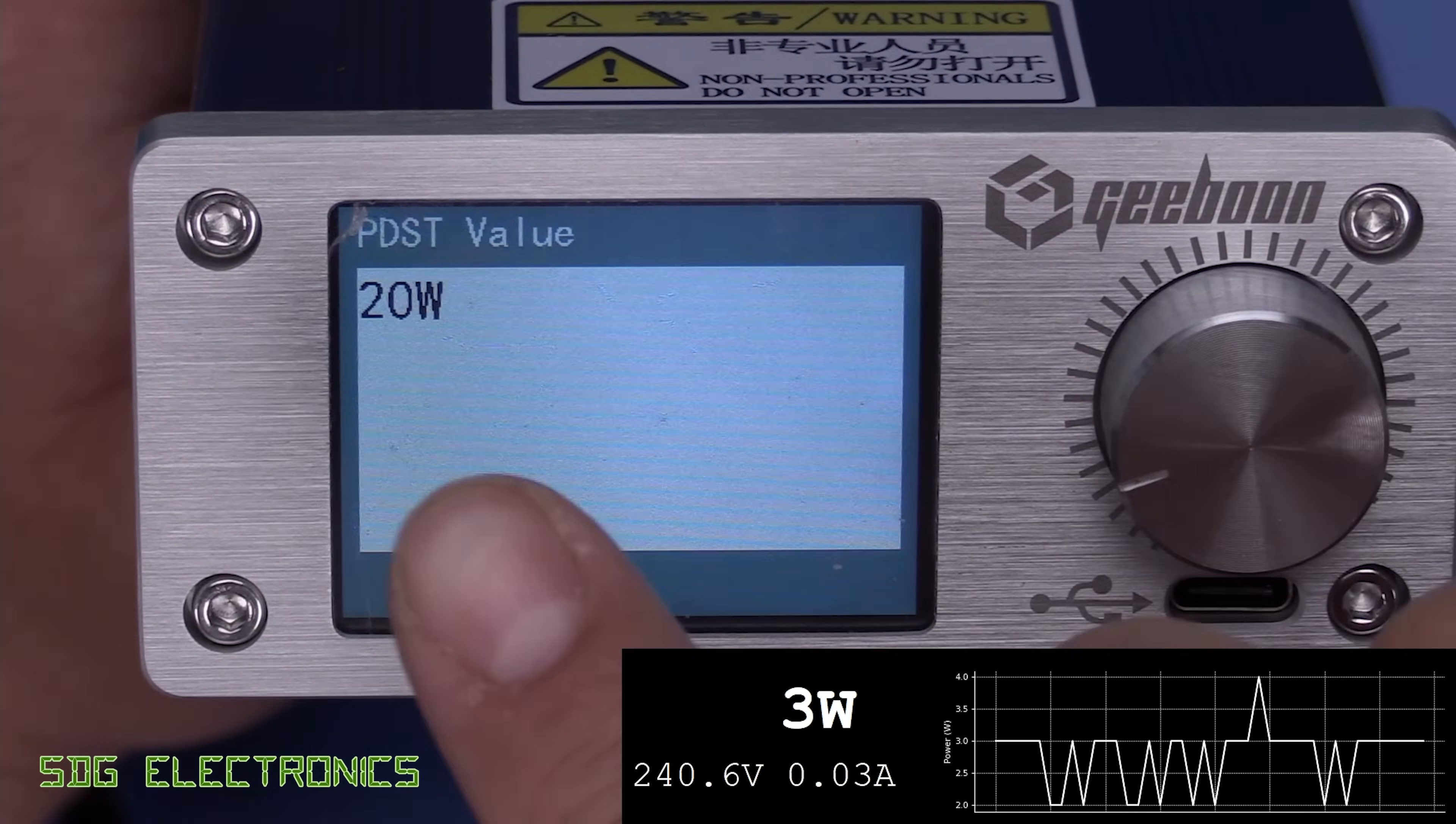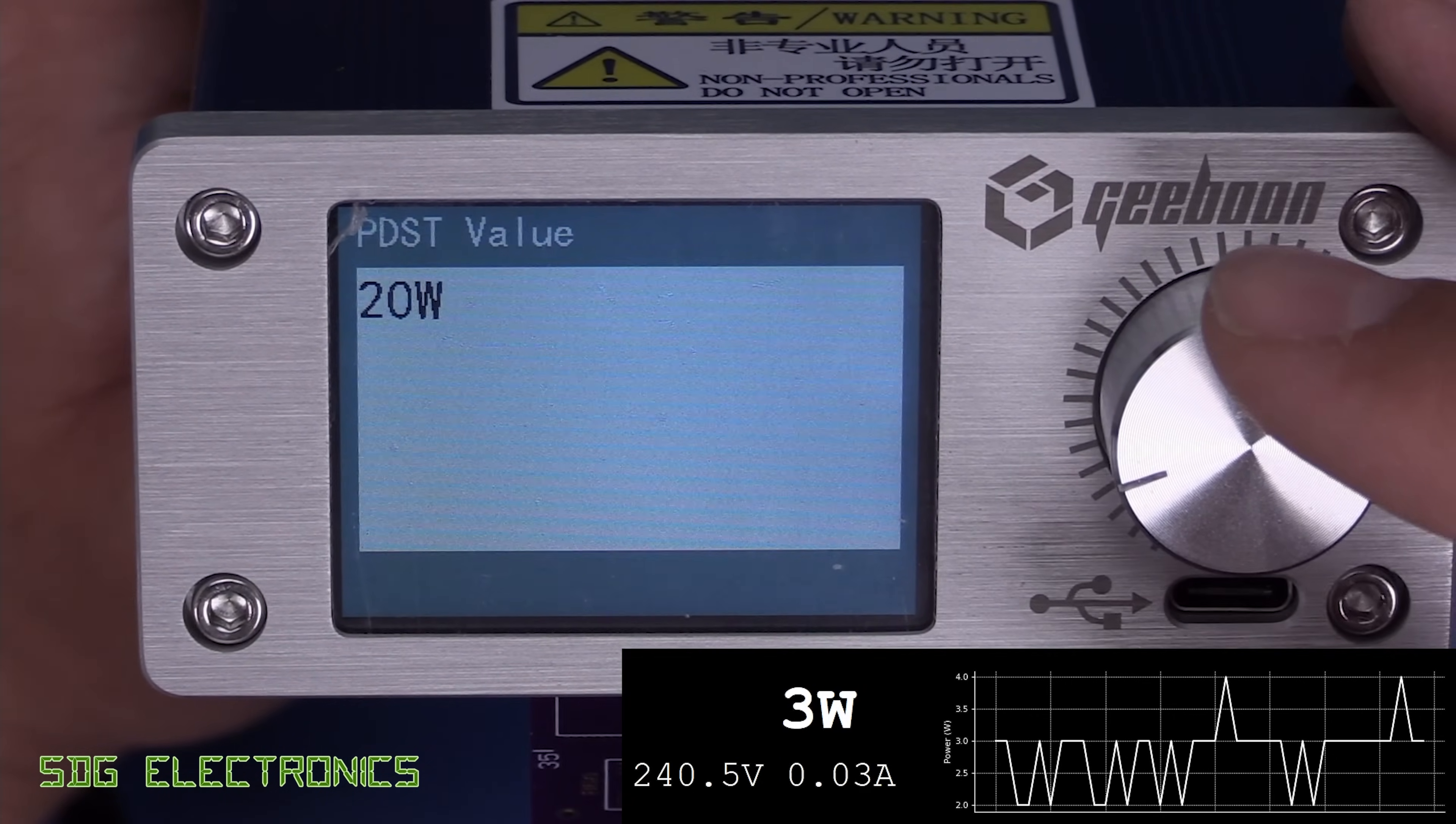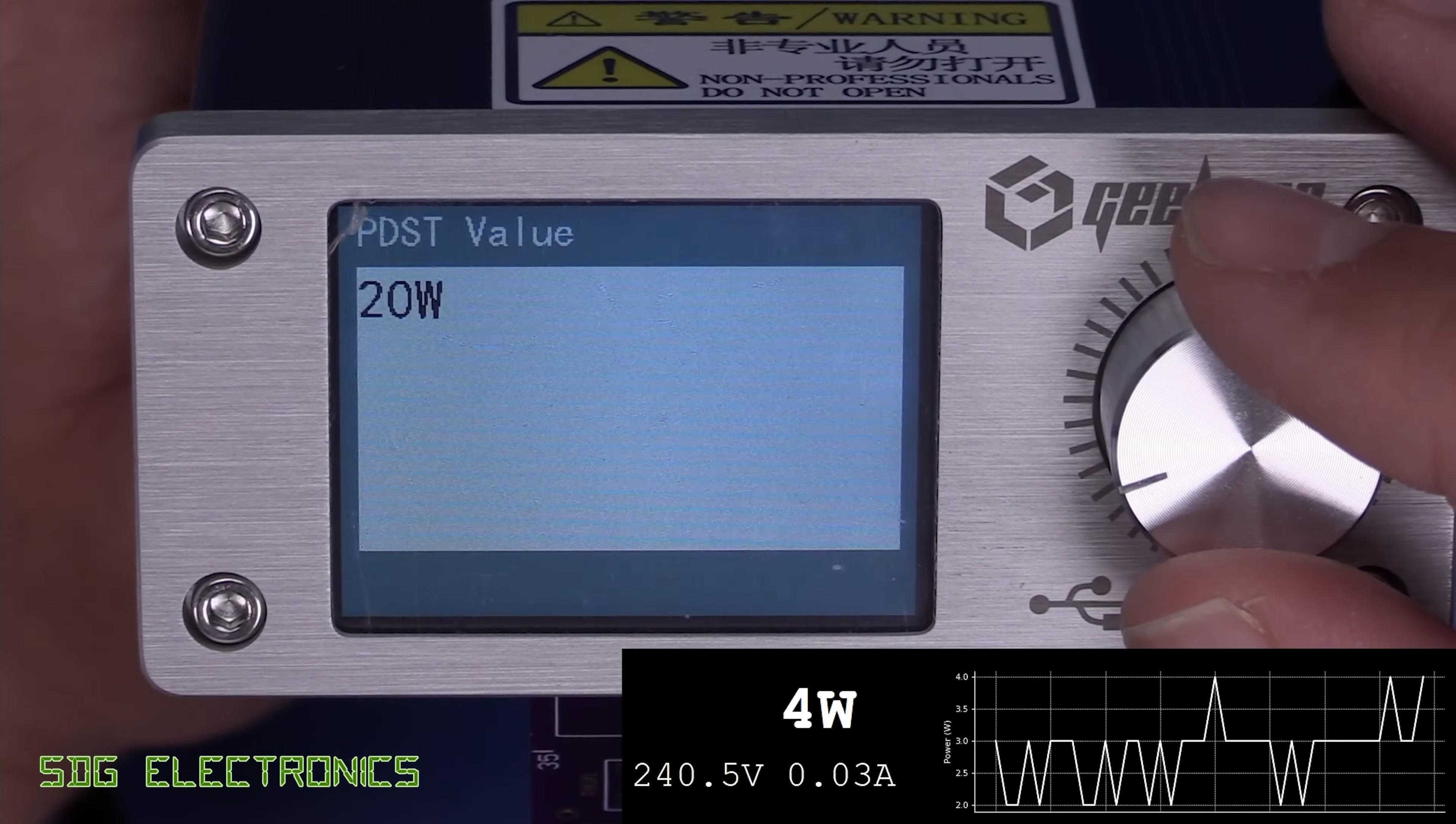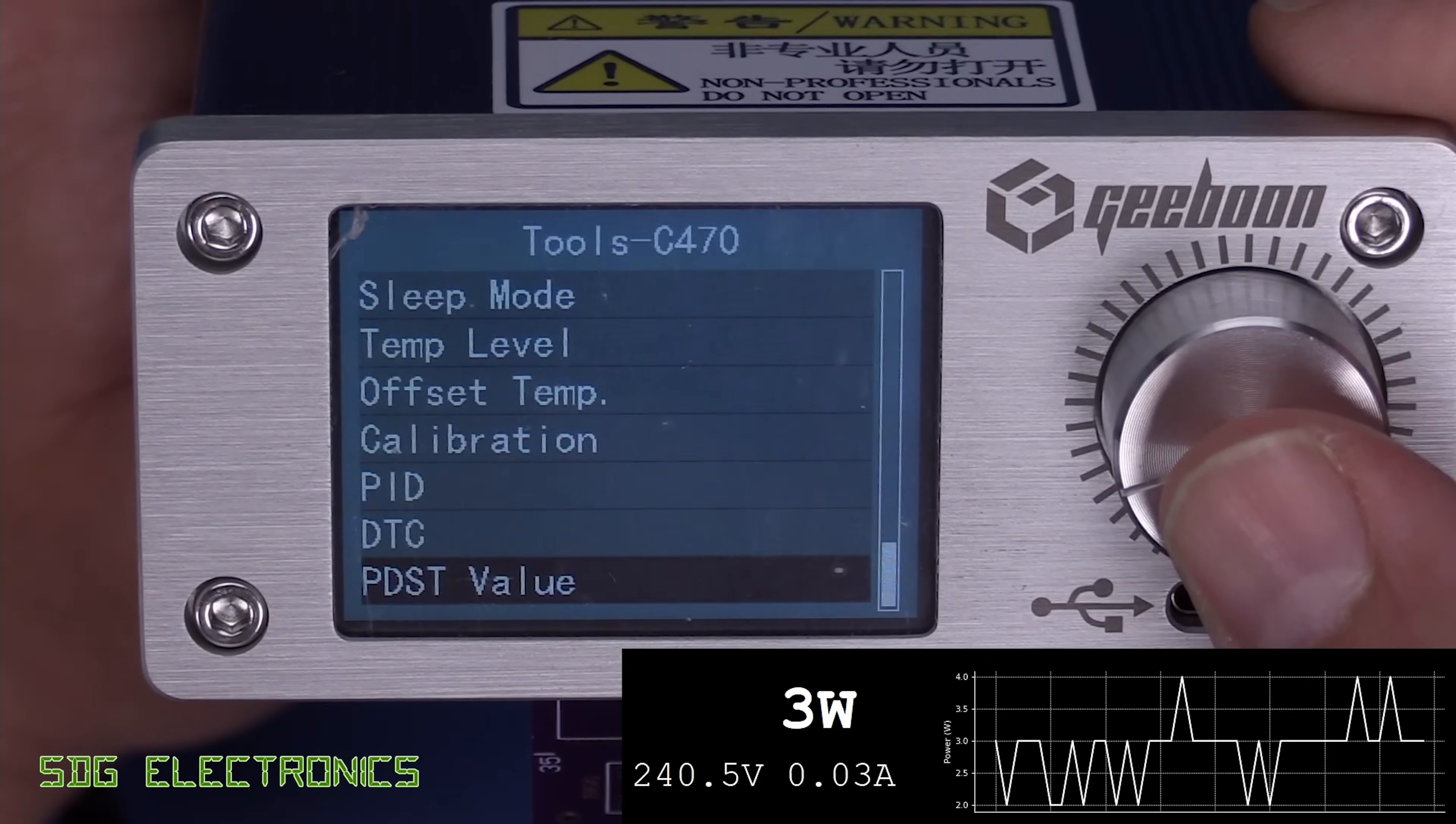So if we're going to here, basically, if we see a continuous power of 20 watts being delivered to the iron and nothing more, it seems it's not done any soldering. And then it can go into sleep mode.